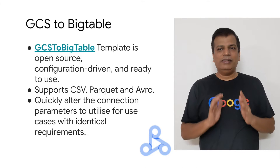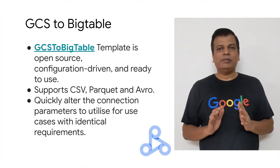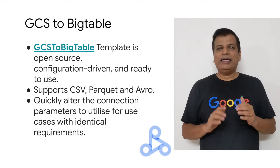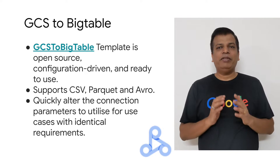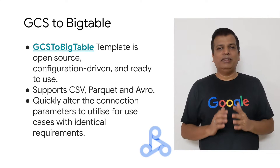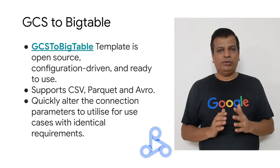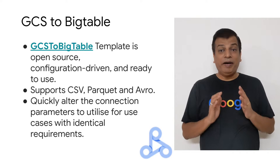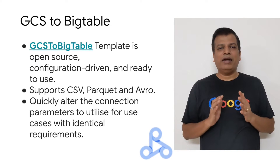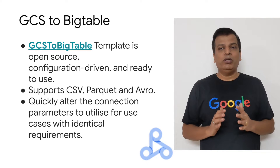Now we will focus on the GCS to Bigtable Java template. This template is written in Spark, which is open source and can be customized based on the user's requirements. These are driven by configurations and are ready to use. This offers the user the power of Spark, and customizing for advanced use cases is super easy.